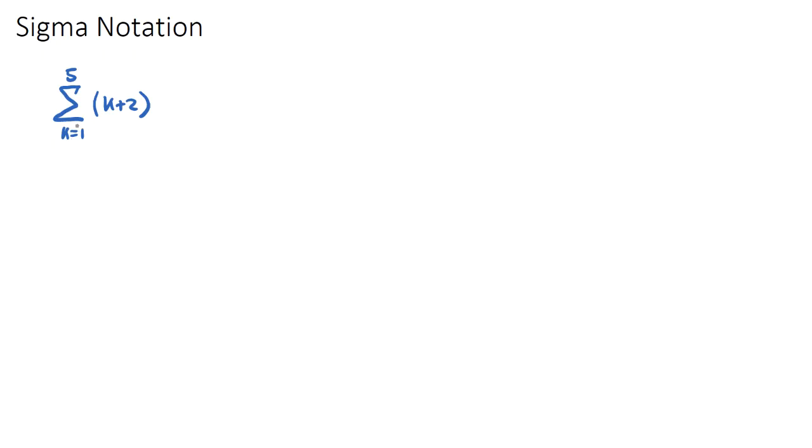It means that if we start with whatever this is here, this value for k. So k equals 1 will be our starting value. If we sub k equals 1 in to whatever we have here in our expression, we're going to get some value here. If we sub k equals 1 in, we're going to get 1 plus 2, which is 3.